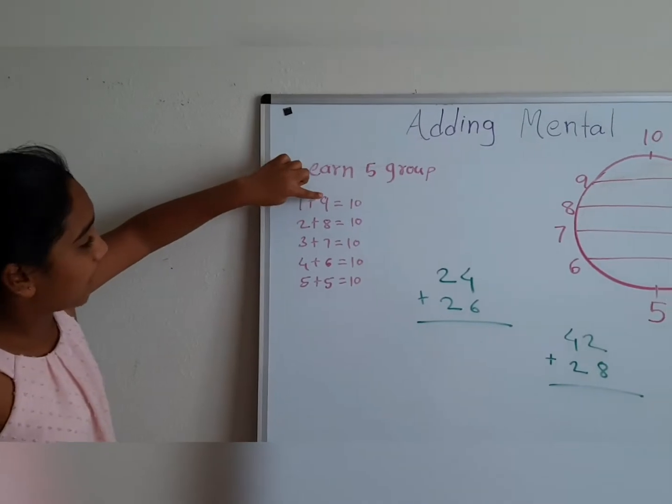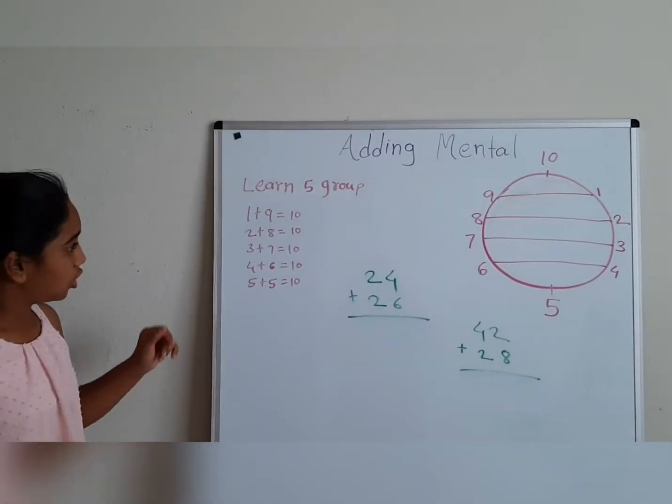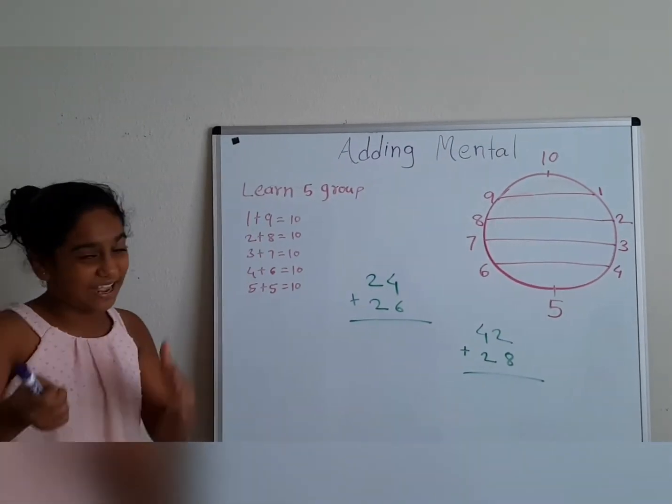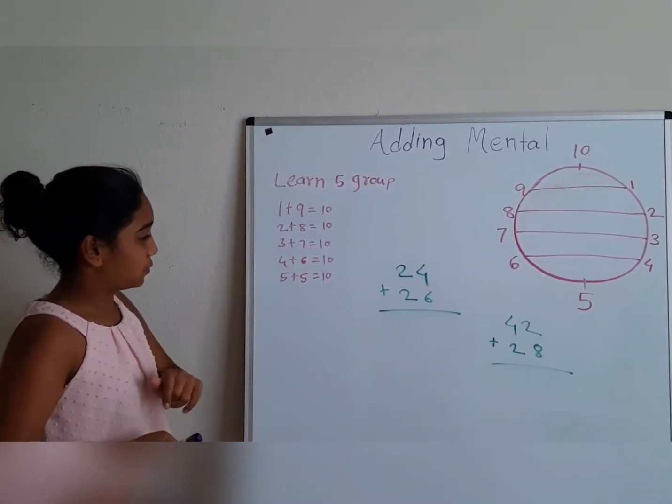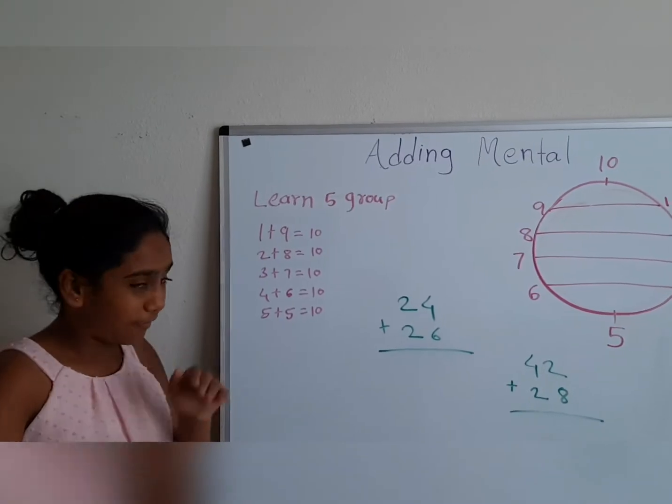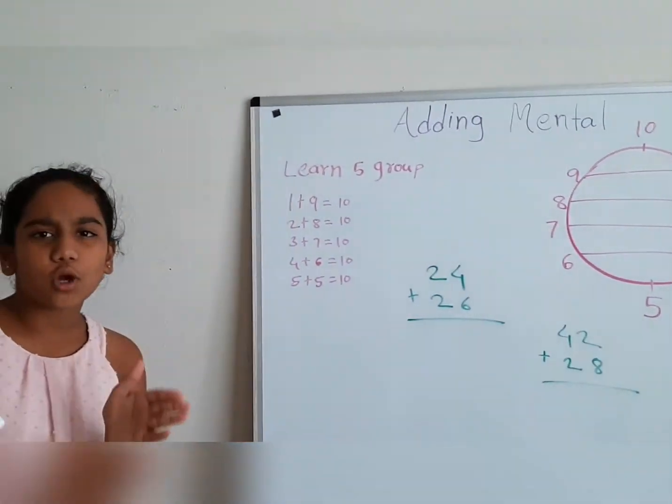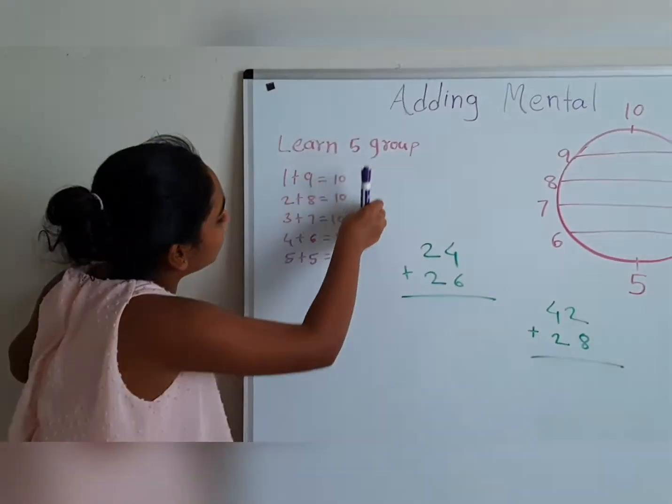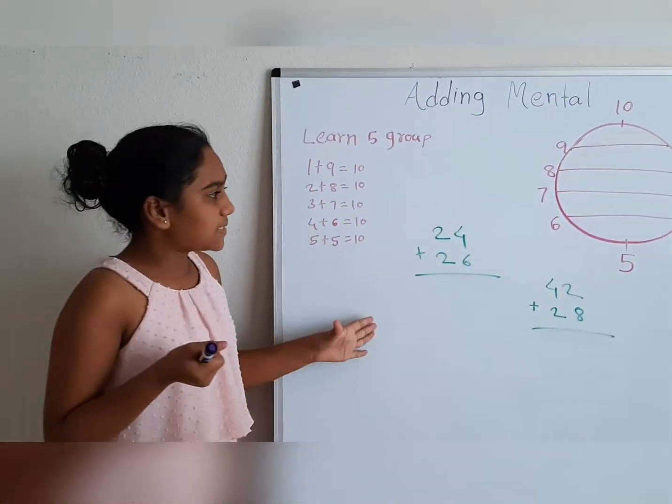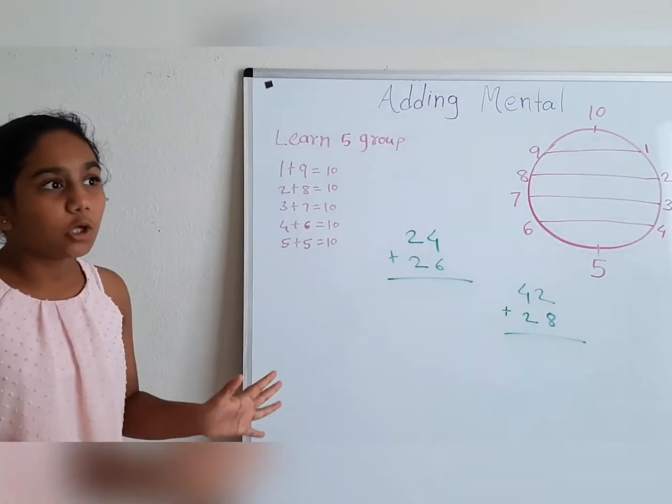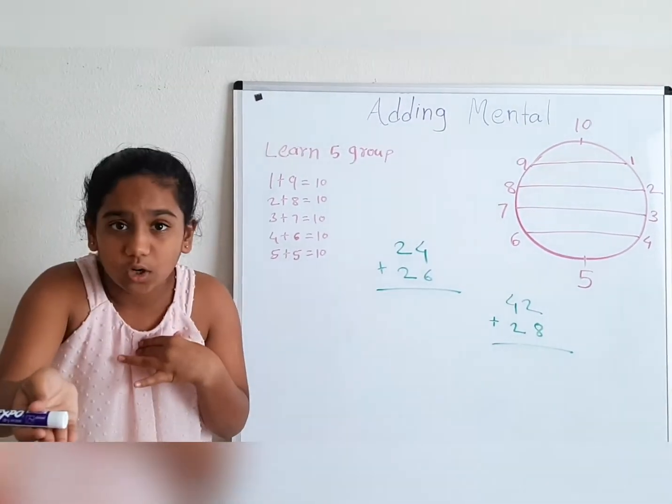1 plus 9 equals 10. 2 plus 8 equals 10. 3 plus 7 equals 10. 4 plus 6 equals 10. 5 plus 5 equals 10. Now, as you notice that all of these are adding up to 10. Because this technique can be used over 10 or equal to 10.